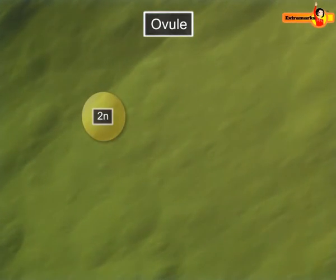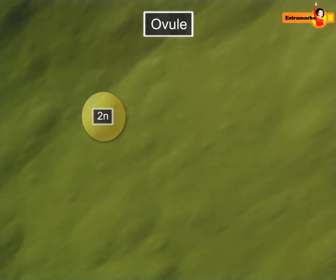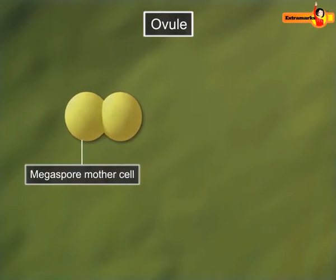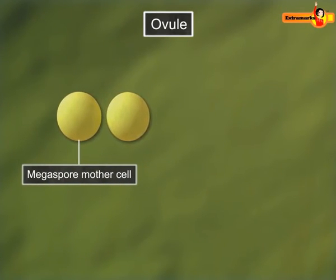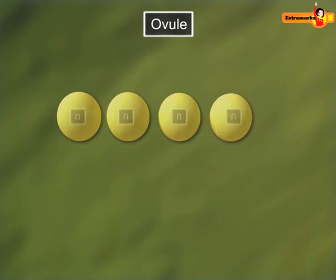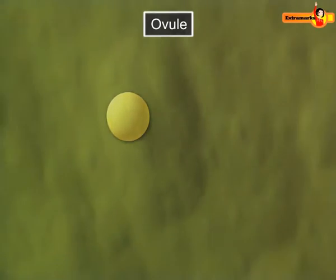The megaspore developing within the megasporangium forms the female gametophyte. The reduction division of the megaspore mother cell gives rise to four megaspores, any one of which may develop further.